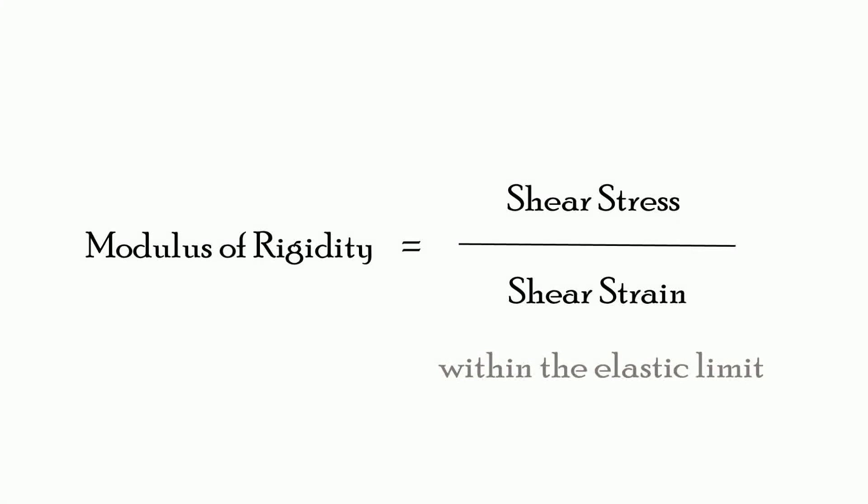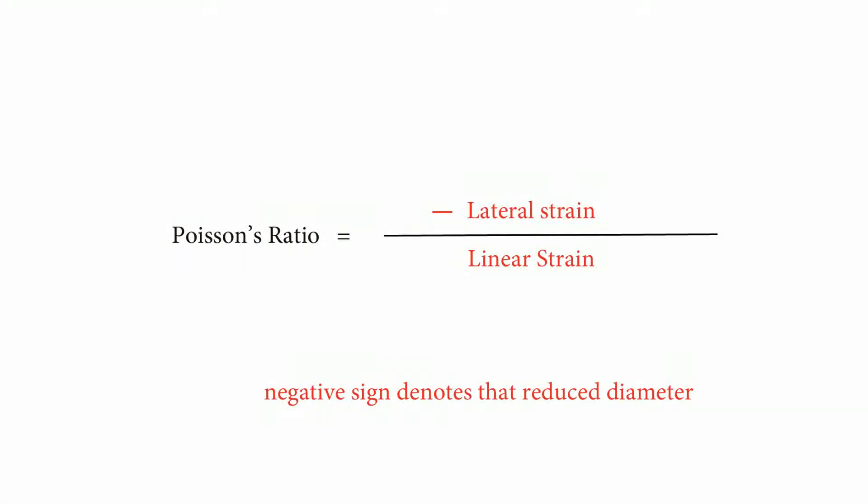In the preceding section we have seen about the elastic limit. The next concept is Poisson's ratio. For common materials, the Poisson's ratio exists from 0 to 0.5. Poisson's ratio equals lateral strain divided by linear strain.